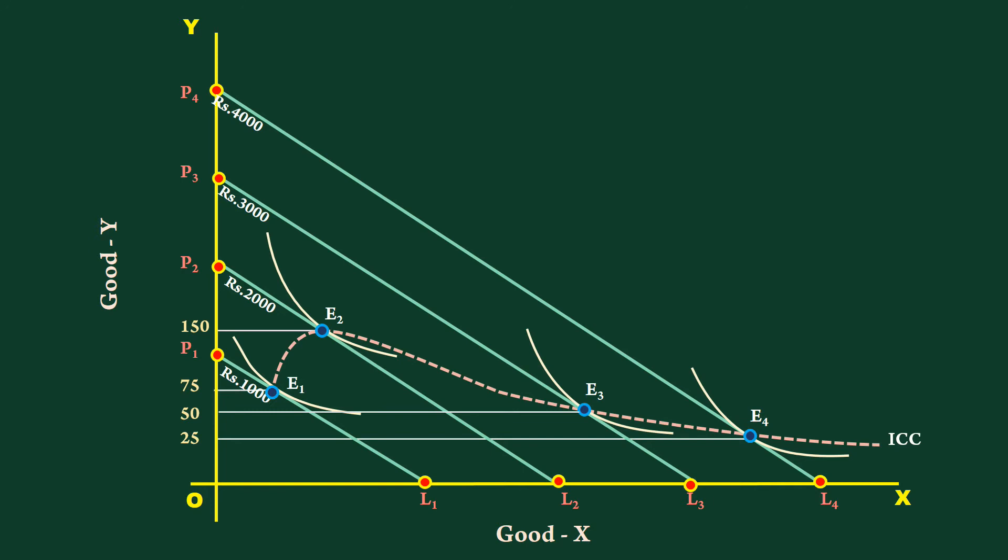It keeps on increasing. The consumer buys 25, 50, 100, and 200 units when his income increases from 1000 rupees to 4000 rupees. Quantity purchased of good X keeps on increasing with increase in income. Income effect of good X is positive. Good X is a normal good.